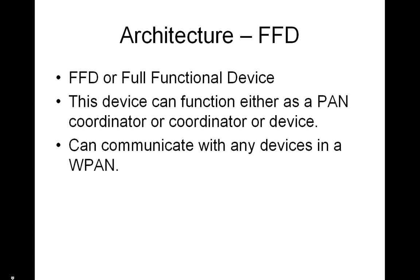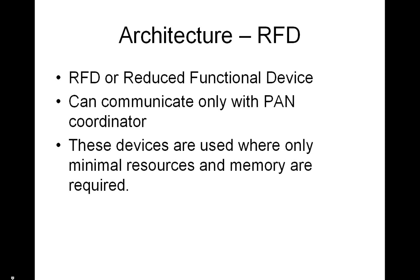An FFD can talk to an RFD or other FFDs, while an RFD can talk only to an FFD. An RFD is intended for extremely simple applications such as a light switch or a passive infrared sensor. They do not need to send large amounts of data and may only associate with a single FFD at a time. Consequently, the RFD can be implemented using minimal resources and memory capacity.